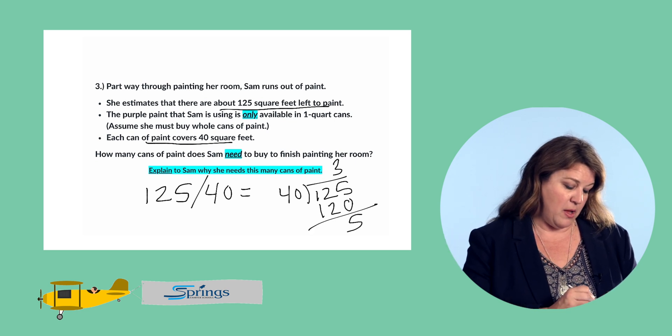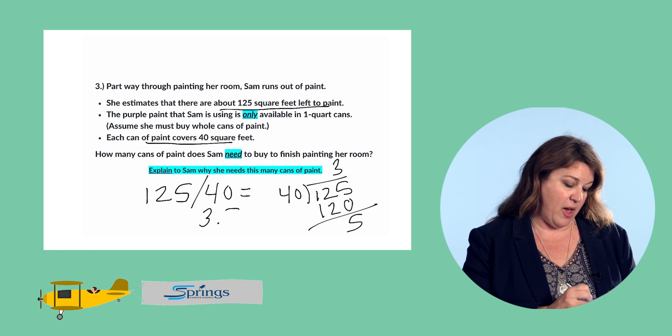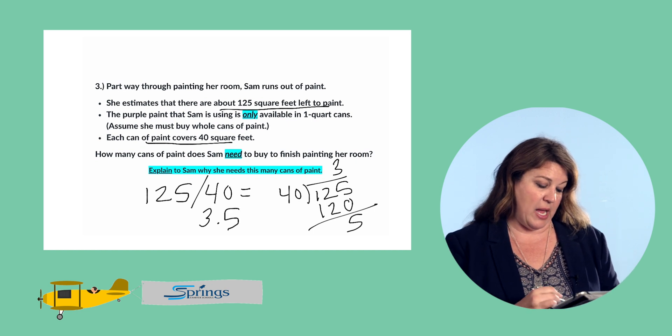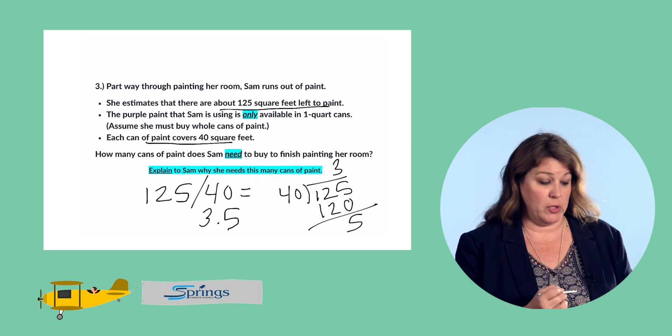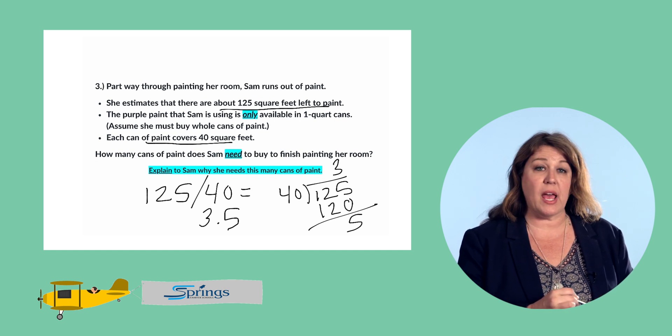So, 3.5 cans of paint are needed. However, she can't buy partial cans of paint. So, we're going to have to round up.